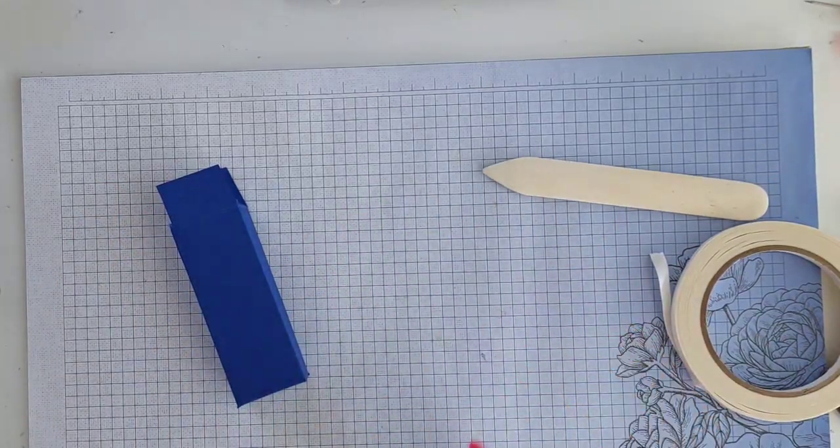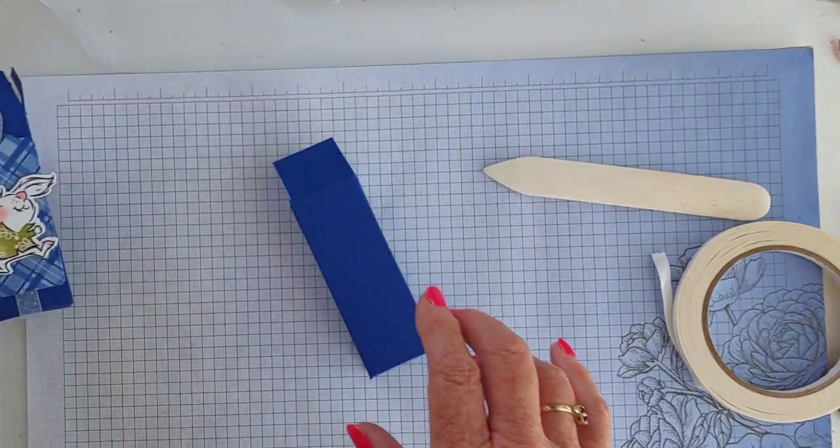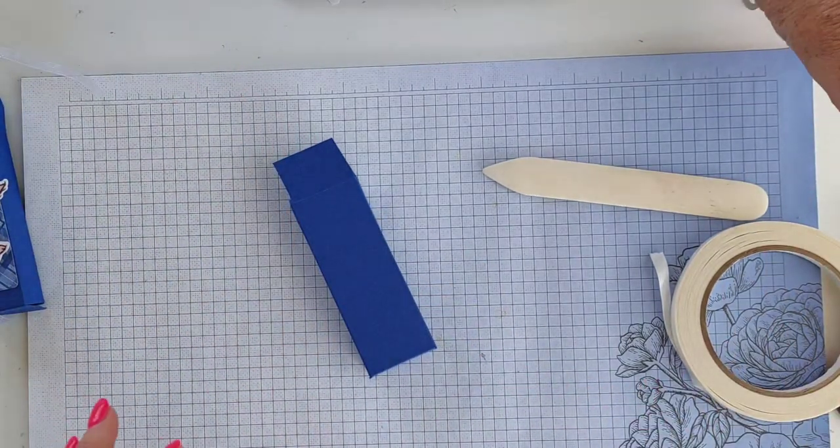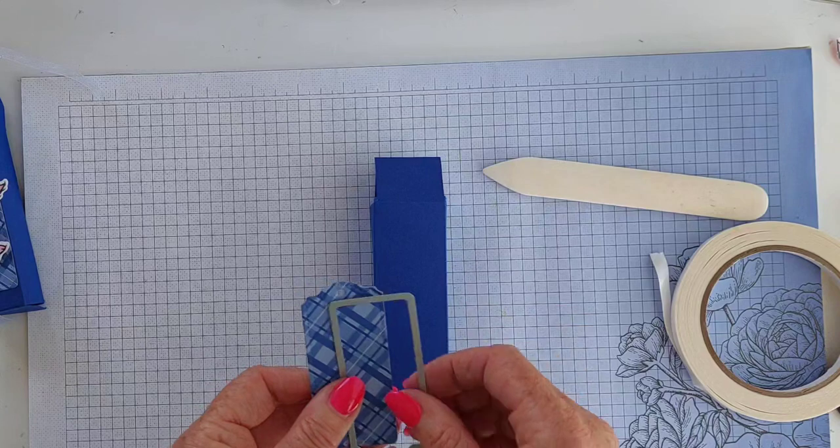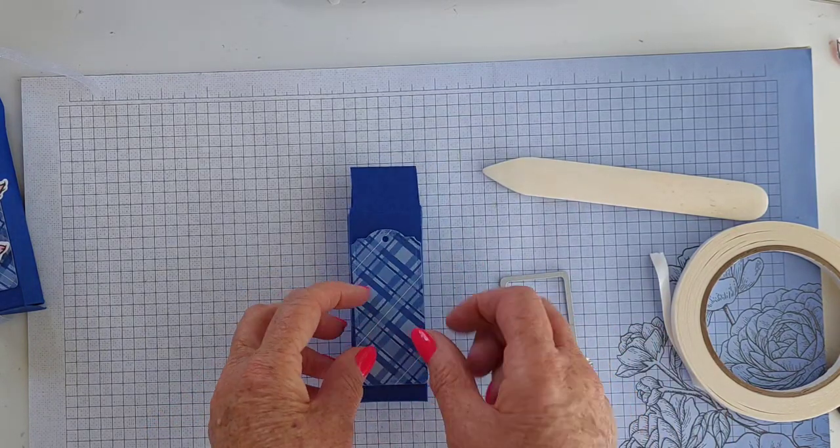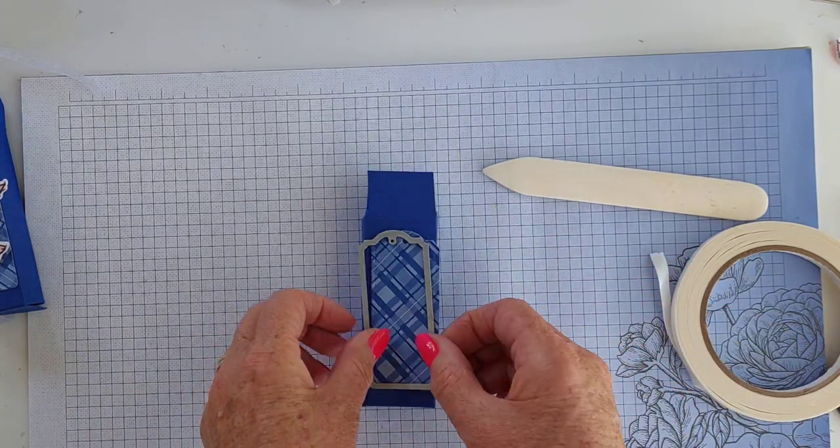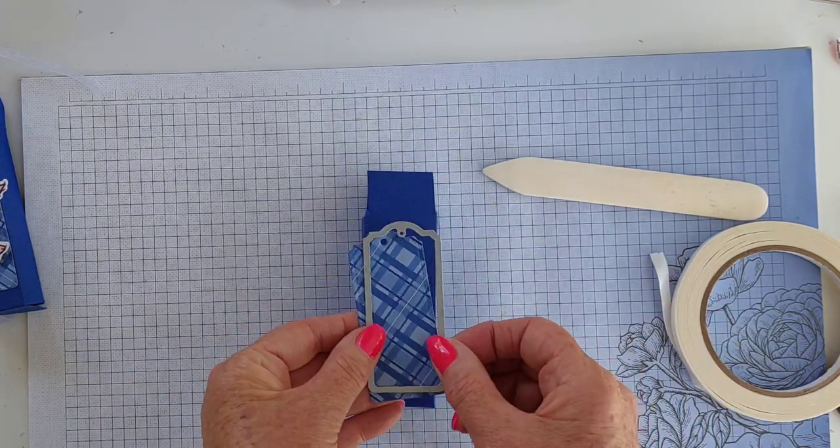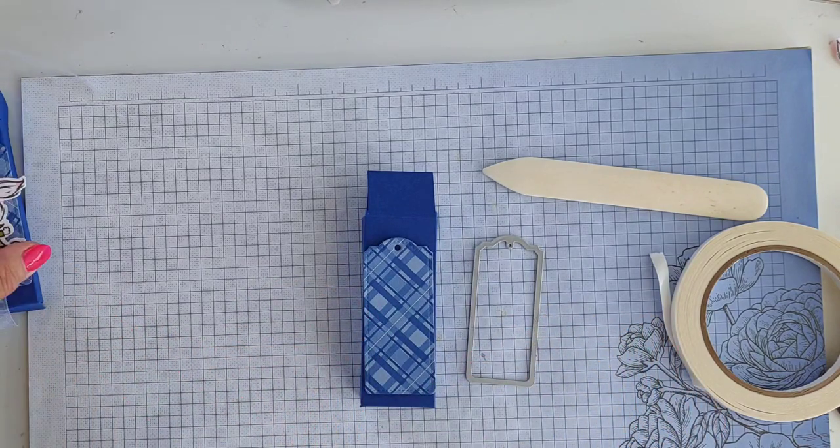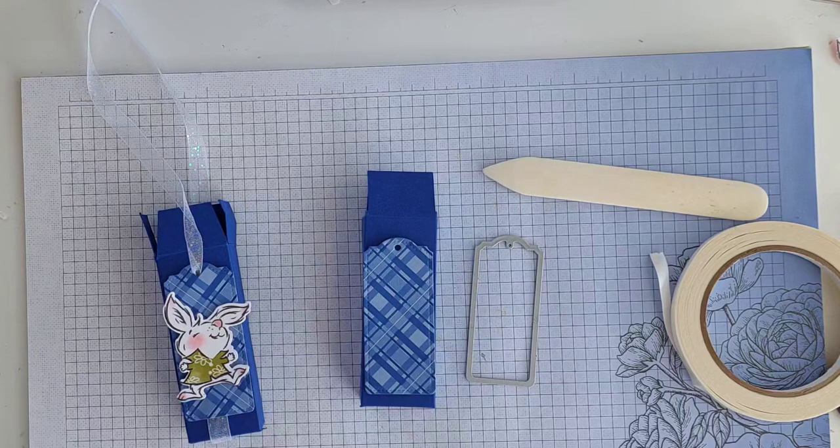All right, so before we do that, I've gone ahead and cut out from the Tailored Tag dies using the designer series paper that matches this cardstock. That's a piece of the Starry Sky designer series paper, and I've cut one of the smaller tags. All right, grab your chosen ribbon, and I'm using the organza ribbon - white organza ribbon, sparkly.